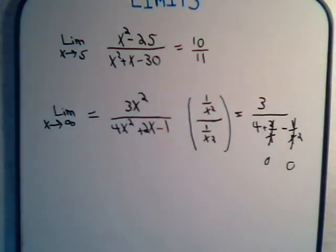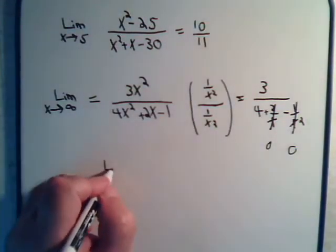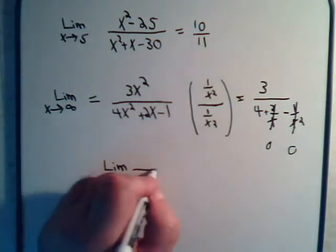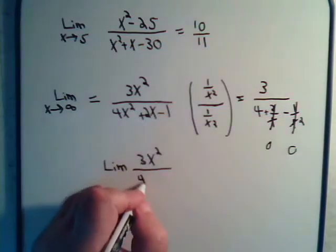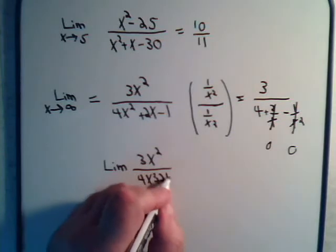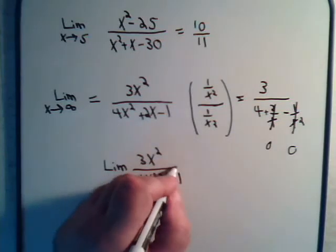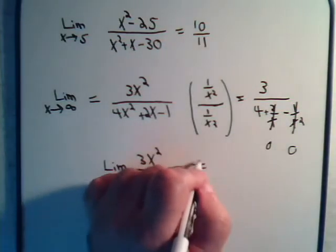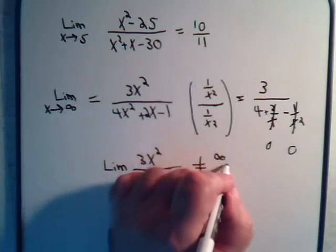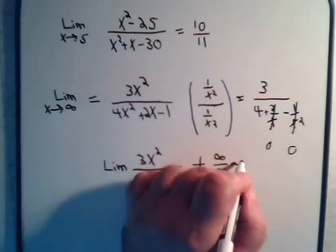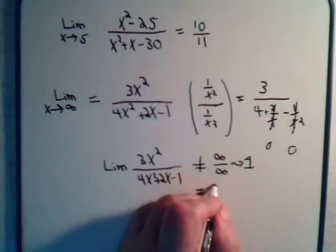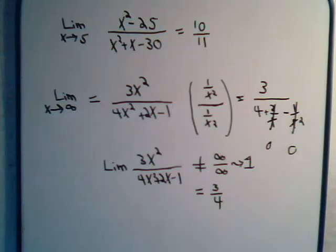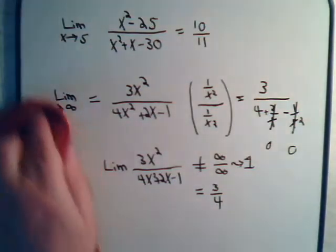So the limit of 3x squared divided by 4x squared plus 2x minus 1 does not equal infinity over infinity that we thought might give us 1. It equals 3 fourths.